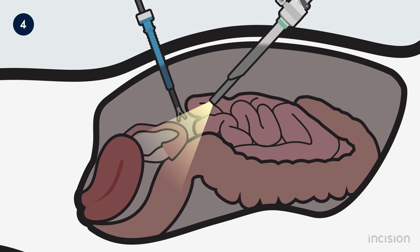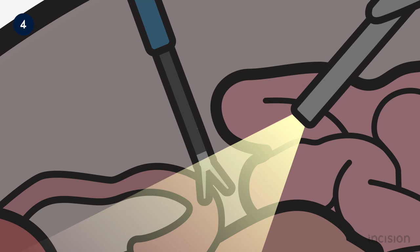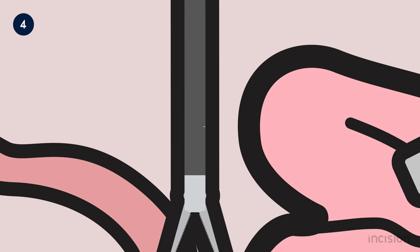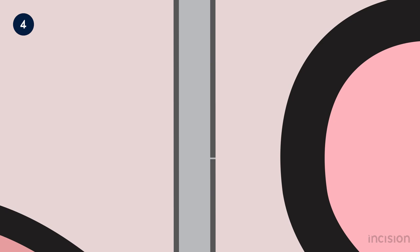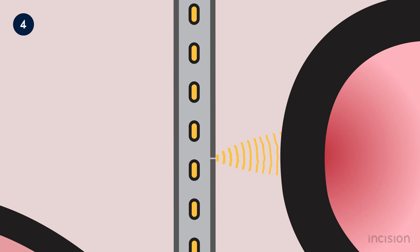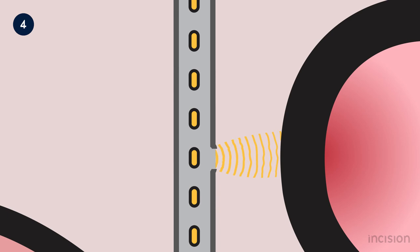Another complication whose chance of occurring can be reduced by using a low voltage is insulation failure. It may happen that the electric insulation surrounding the conductive core of a hand-held electrode is damaged. A microscopic scratch or hole in the insulation can be enough to allow an alternative pathway to form. During activation, the high current density at this location can burn both tissues and the remaining insulation. Often, this location is outside of the operator's field of view, and thus it can take a long time before burns are noticed.